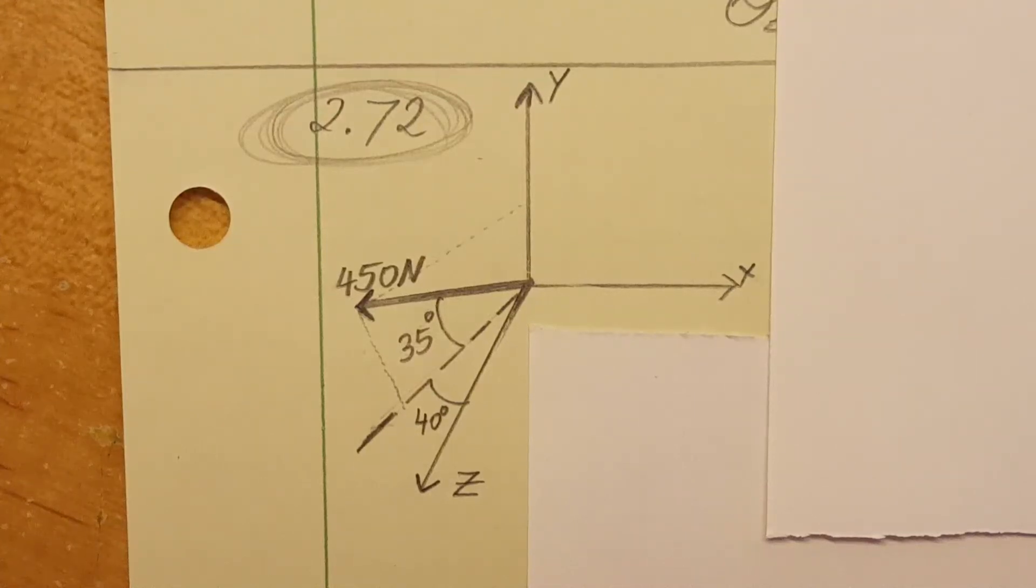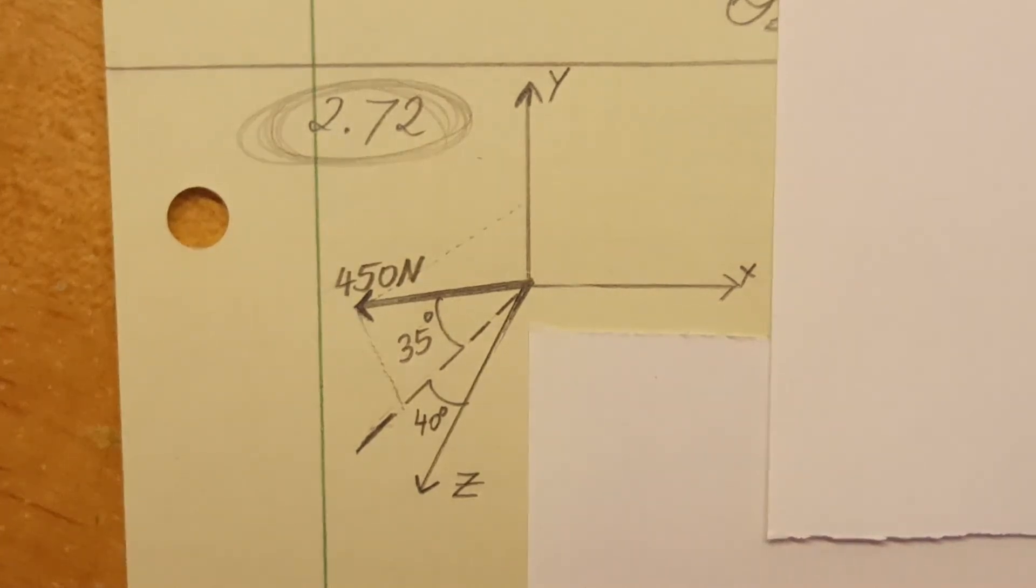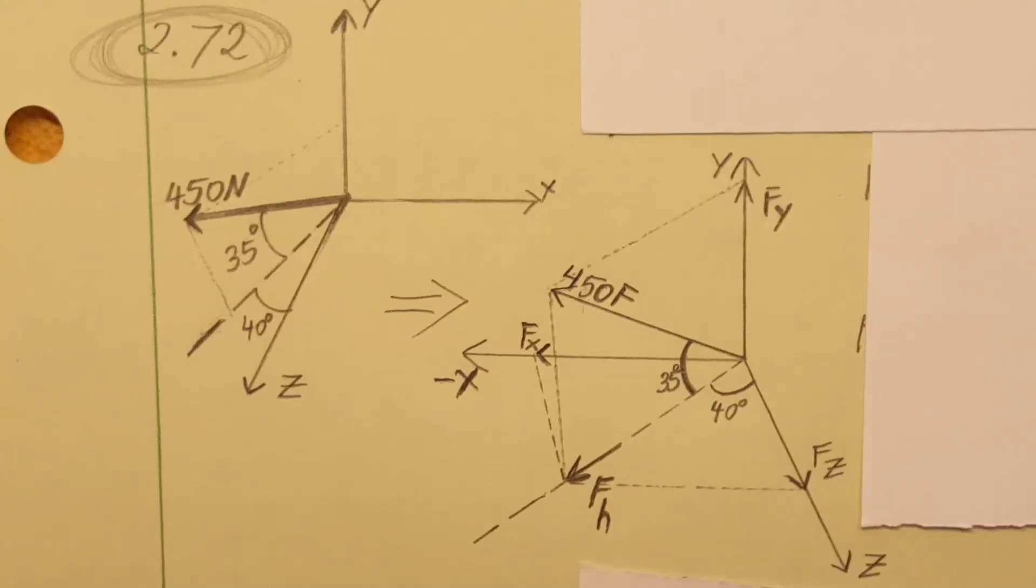Okay in this problem we're gonna be doing some work with 3D vectors. They want us to determine the X, Y and Z components of this 450 Newton vector and then in part B they want us to find the theta X, Y and Z that the force forms with the coordinate axes.